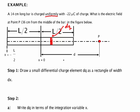So when we write dq, what does it mean? It's the charge in that box. This box has some width dx, and it's located at a distance x from the origin.